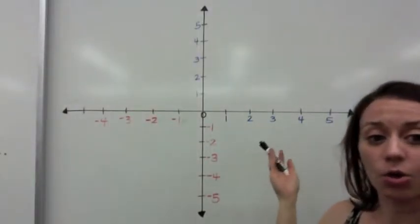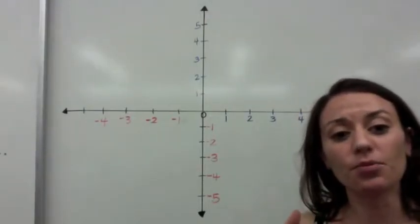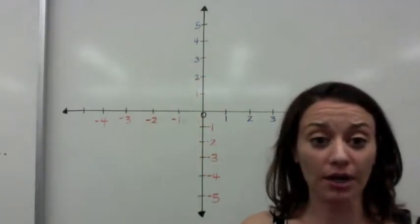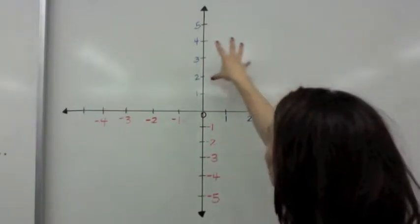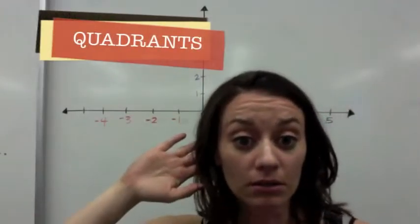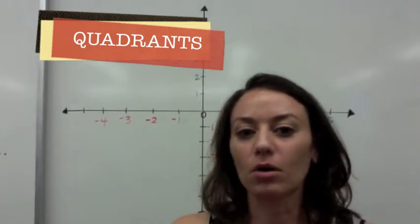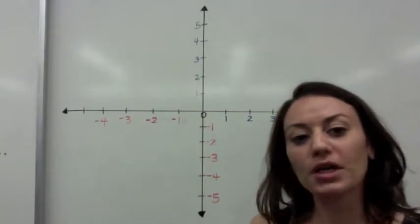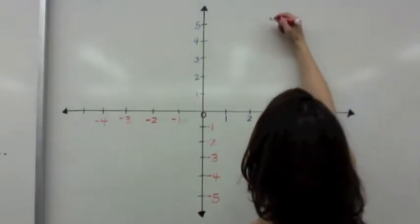So we're going to use this information to now talk about quadrants. Here we are again on a coordinate plane. Now when we start to graph points, it's very important that we can identify which region of the coordinate plane we are talking about. It is divided into four distinct regions, and we call those quadrants. So I'm going to go through the quadrants one at a time, and we're going to talk about what will happen when you graph those points. Let's talk about quadrant one.